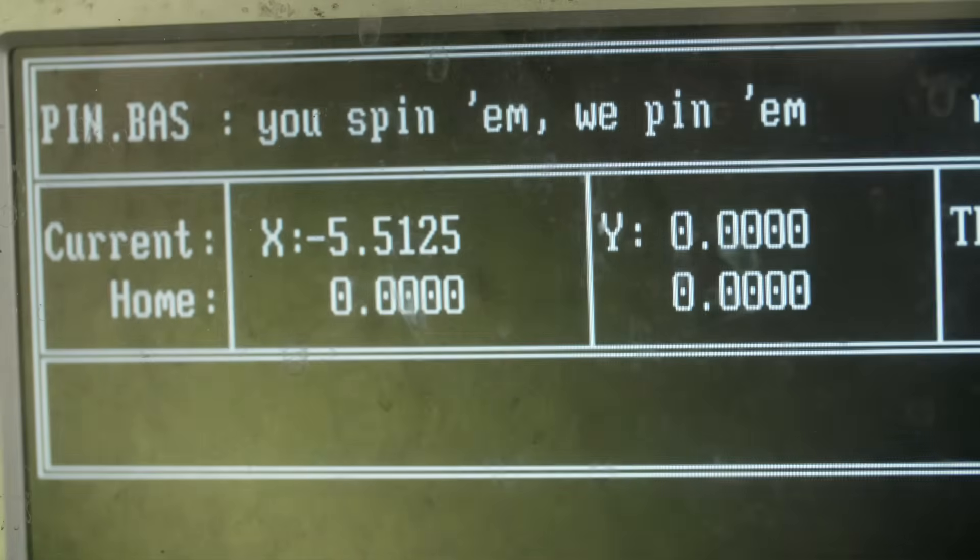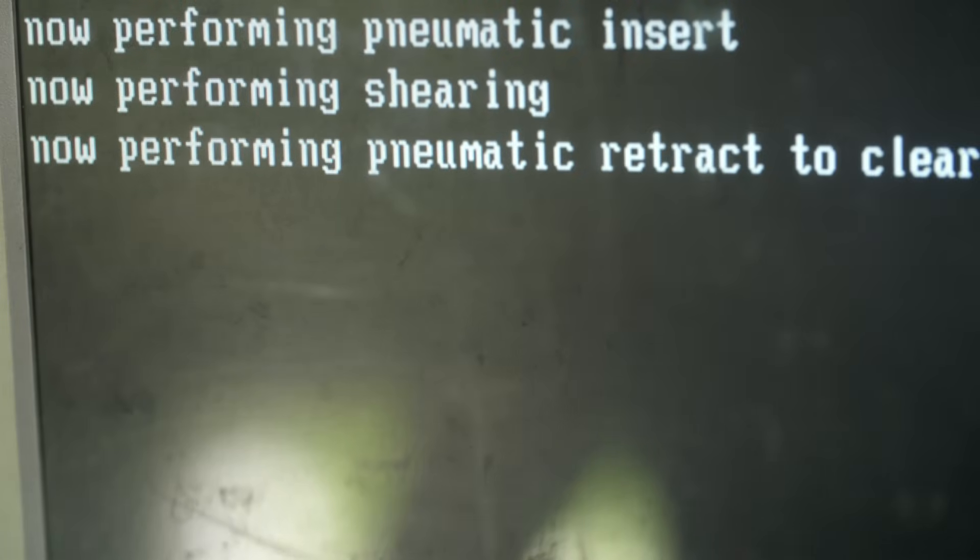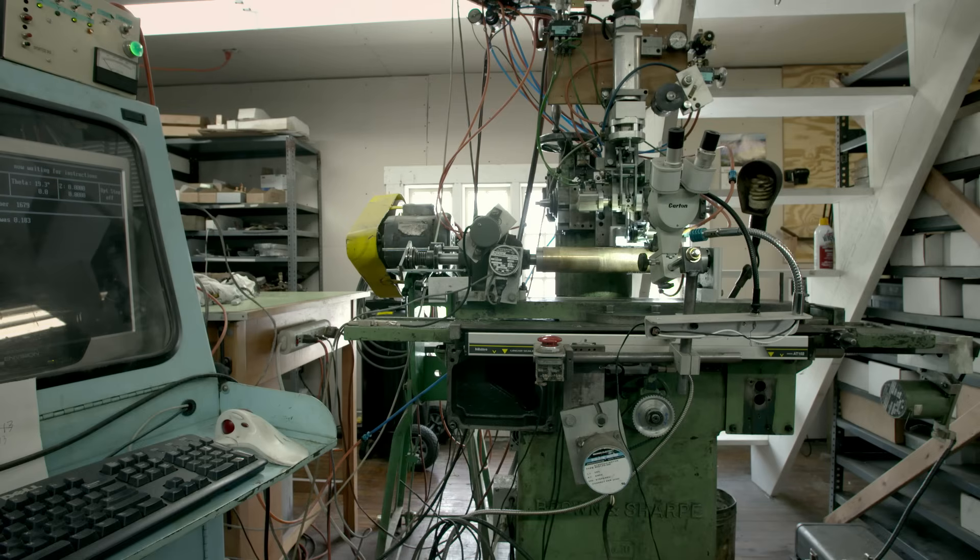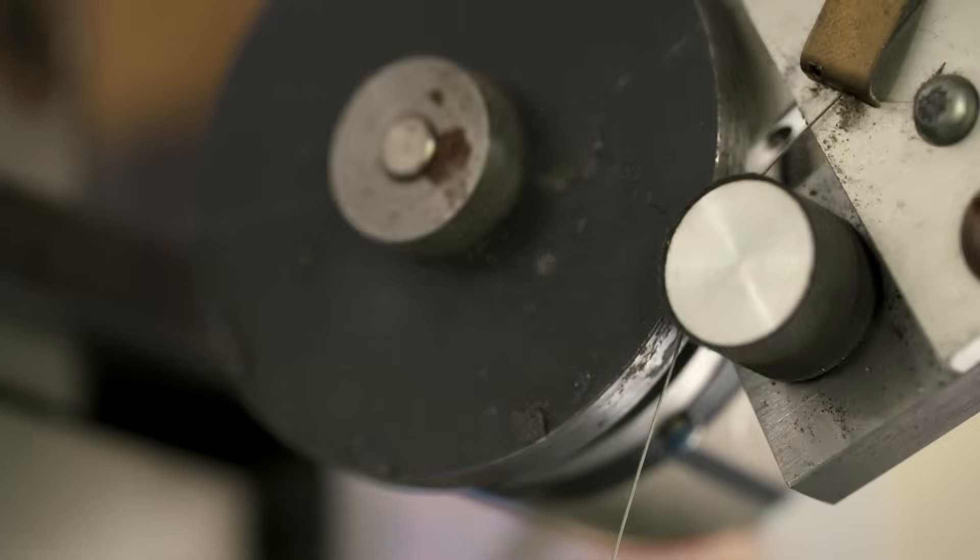The computer knows the location of every note in the tune, and this is the machine that selects that location on the cylinder, drills a hole there, and inserts a small piece of music wire into that hole.